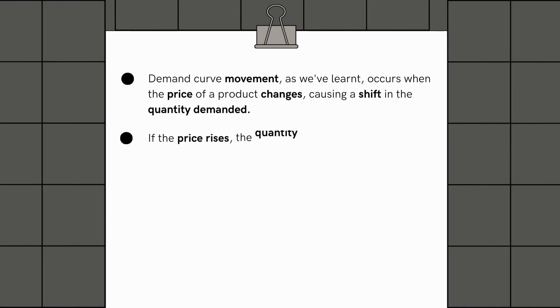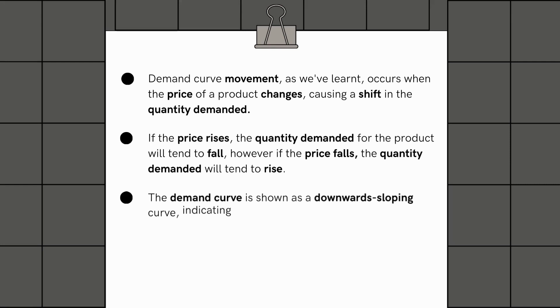If the price rises, the quantity demanded for the product will tend to fall. However, if the price falls, the quantity demanded will tend to rise. The demand curve is shown as a downward sloping curve, indicating the inverse relationship between price and quantity demanded.